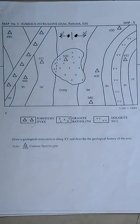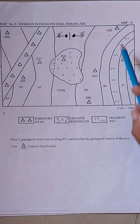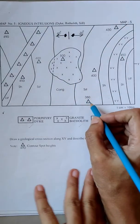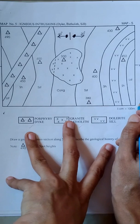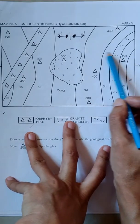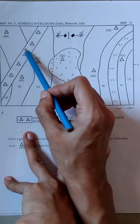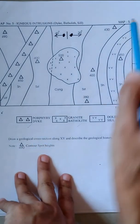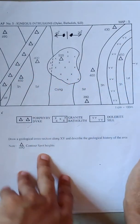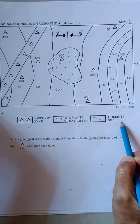In map number five, there are no contour lines given, but you can see there are some triangles with values — these triangles indicate the benchmark of that area, meaning the elevation with respect to mean sea level. There are different rock beds with inclination: three beds are inclined 40 degrees west and other beds are inclined 30 degrees east. There are also different intrusions present, mentioned as porphyric dike, granite batholith, and dolerite sill.